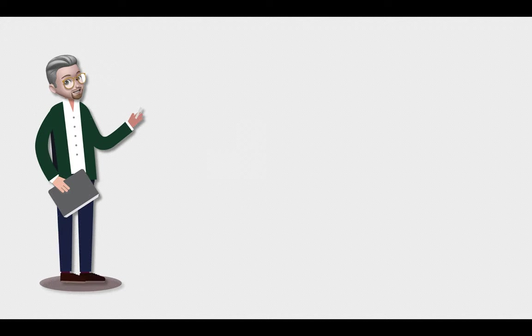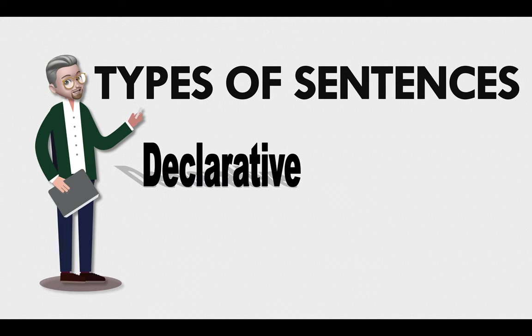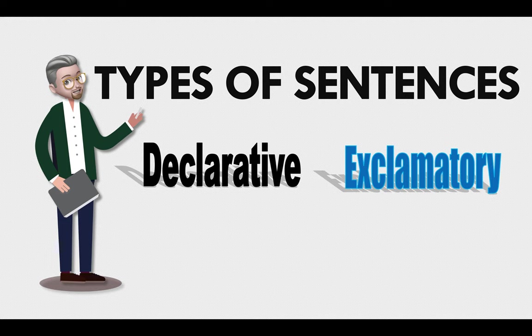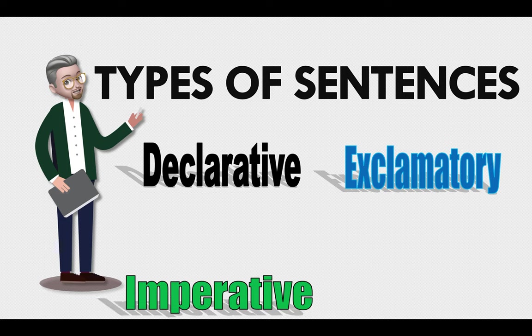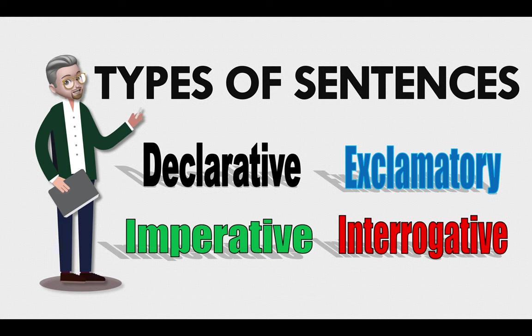Hello everyone, this is Mr. P. On today's lesson we're going to take a look at the types of sentences in English. We have declarative, exclamatory, imperative, and interrogative. So let's get started with declarative.